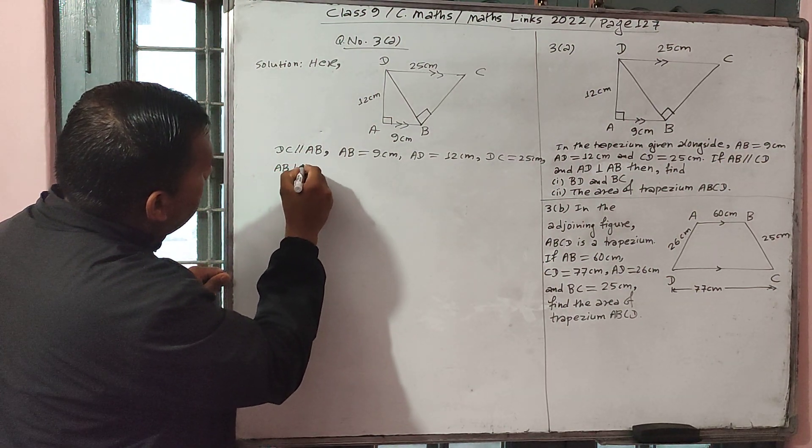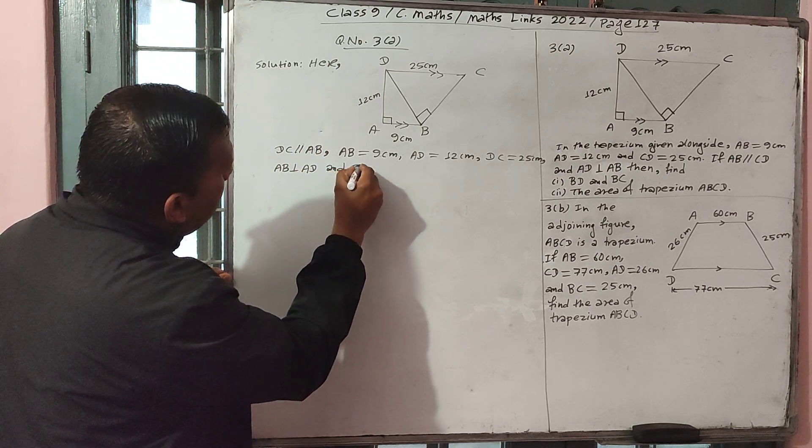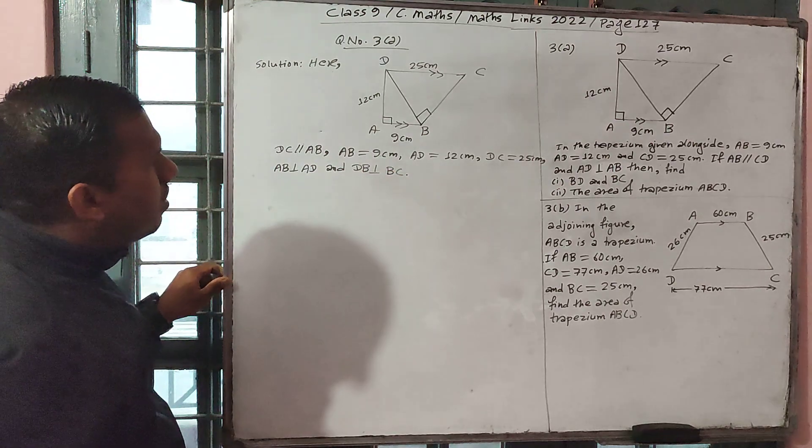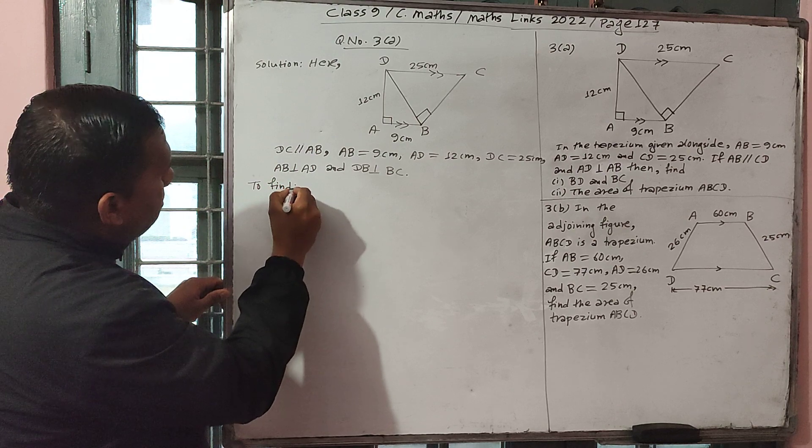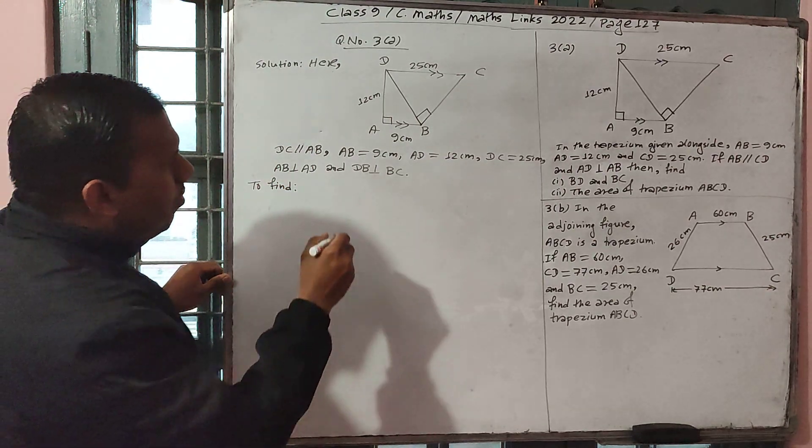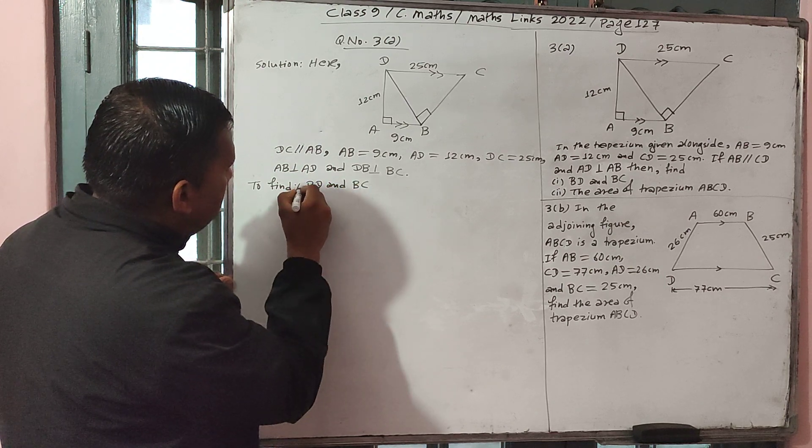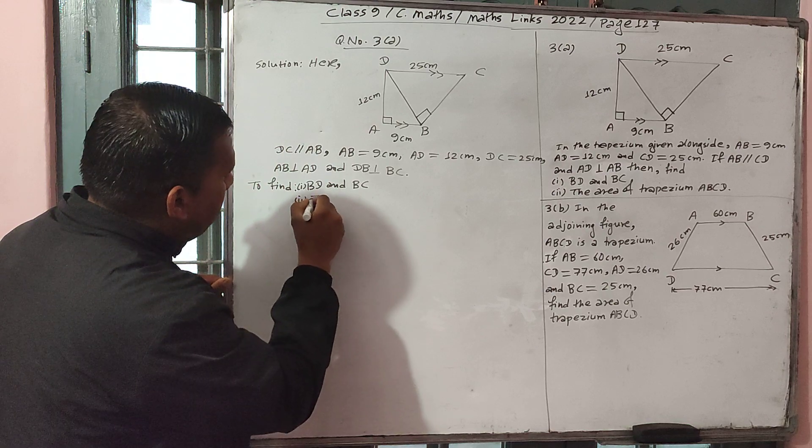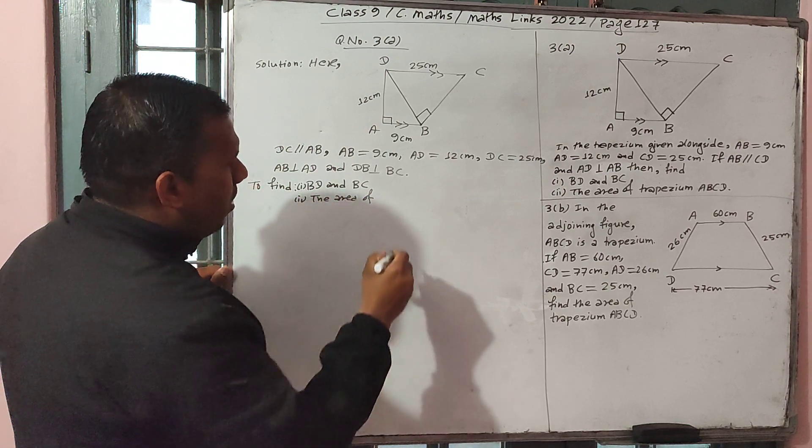AD perpendicular to AB, and BD perpendicular to DC. To find BC and the second part is the area of trapezium ABCD.